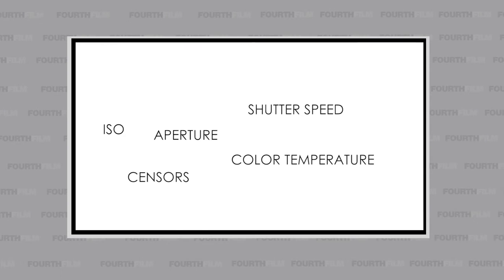Understanding how a camera works will help you to a great extent in becoming a better cinematographer. Starting out, there are a few terms you need to be comfortable with: ISO, aperture measured in F-stop or T-stop, shutter speed, color temperature measured in Kelvin, sensors, dynamic range, depth of field, and the list goes on. So before I start speaking jargon, let's pretty much get used to the basics. Here are parts of cameras since we're using those terms a lot.